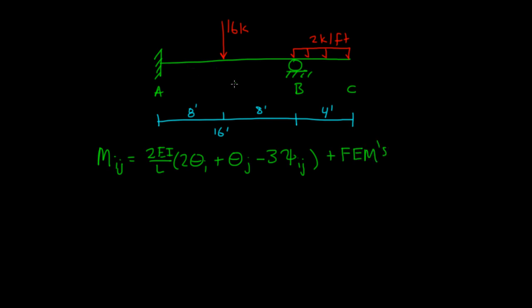If I'm going to write a moment equation for one of the spans, let's say we do span AB. So I cut it close to the joints and I look at member AB. I have the 16 kip load applied here at mid-span.